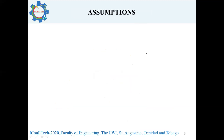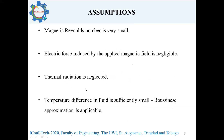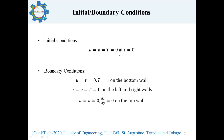Some assumptions used in this problem: the magnetic Reynolds number was assumed to be very small, the electric force induced by the applied magnetic field is neglected, and thermal radiation effects are also neglected. The Boussinesq approximation is used to describe the buoyancy forces within the fluid. Based on these assumptions and the problem description, we arrived at governing equations comprising the continuity equation, momentum equations in the x and y directions, and the energy equation, along with corresponding initial and boundary conditions.